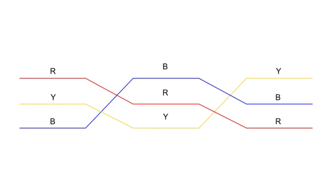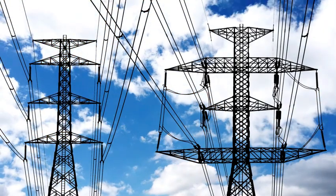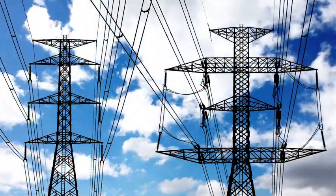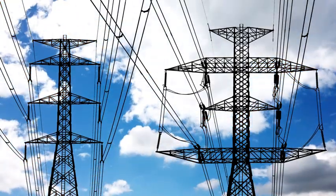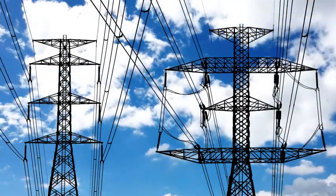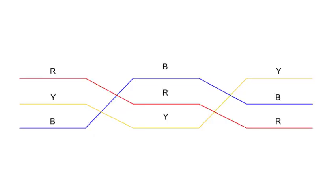Let's talk about the actual implementation. Transposition is done by specially designed towers, where the positions of the conductors are physically interchanged. This doesn't happen frequently. Usually one complete transposition cycle is done over a long distance, like 300 to 400 kilometers, depending on the system design.